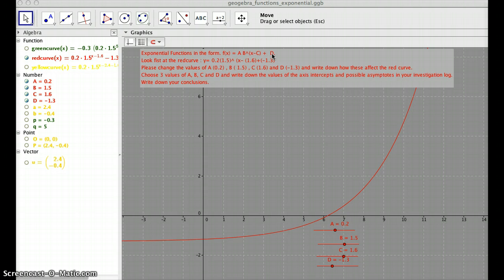So let's see what these numbers do. We need to change a, b, c, and d and we need to give them three values each and then write down in an investigation log what that does to the curve, the exponential curve.